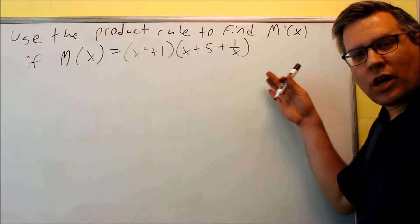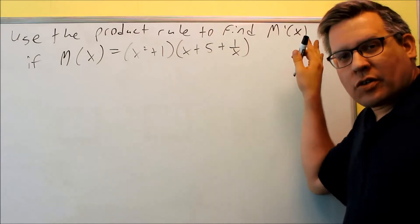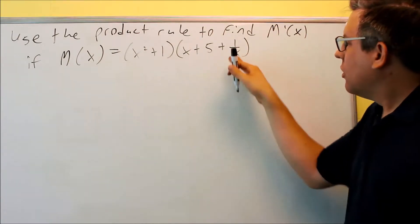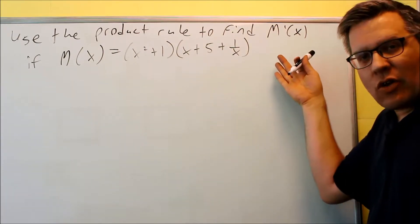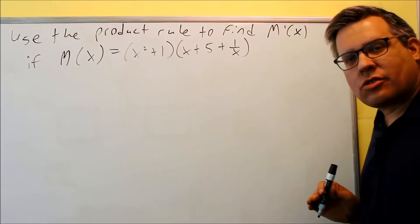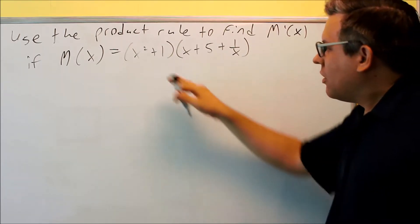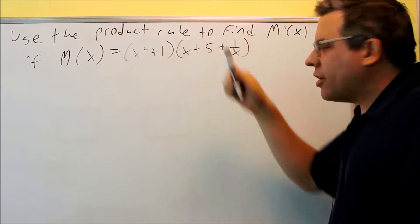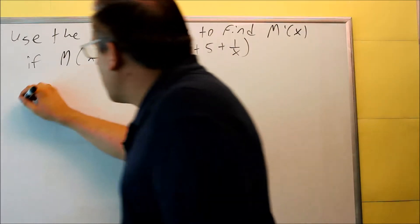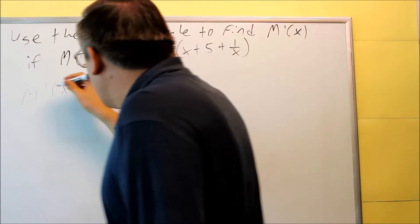We have another one with product rule. This one doesn't say anything about writing as a single fraction, so we don't need to worry about that. So if it doesn't tell us that, then we can just leave our answer as separate fractions. Okay, here's your f. This whole part over here is your g. We're going to follow the same product rule formula.